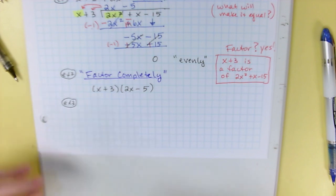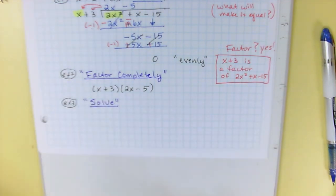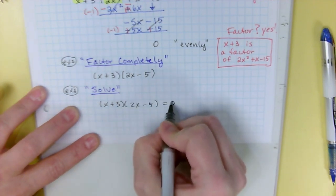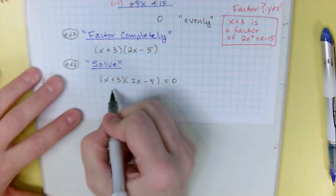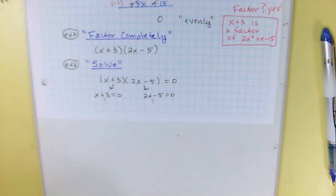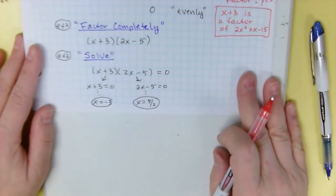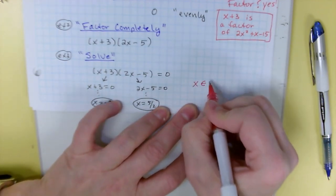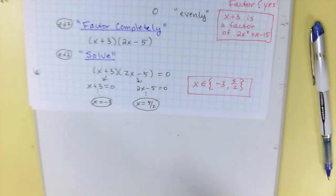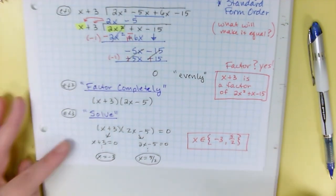There are three types of questions they'll give you. If it says 'is it a factor,' your answer is yes — I got a remainder of 0, that means it's a factor. If it says 'factor completely,' you write it in factored form: x plus 3 times 2x minus 5. If it says 'solve,' you divide out using long division, write it in factored form, and then set factored form equal to 0. Zero product property: set x plus 3 equal to 0 and 2x minus 5 equal to 0 and solve. x is negative 3, x is 5 halves. So x is an element of the set containing negative 3 and 5 halves.